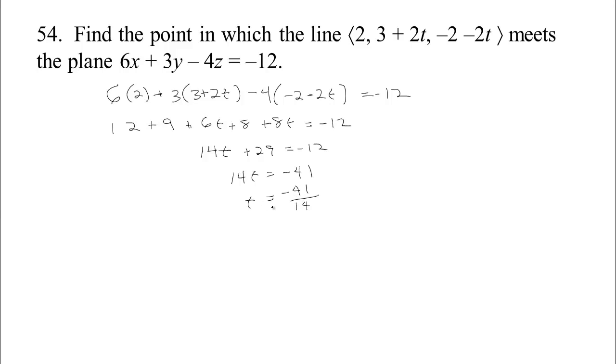This tells us what value of t when we lie on the line. So now we can find the actual point on the line. We know that the x coordinate is going to be 2. The y coordinate of that point on the line is going to be 3 plus 2t. So that's going to be 3 minus 41 over 7, since 2 times negative 41 over 14 is negative 41 over 7. And finally the z coordinate is going to be negative 2 plus 41 over 7.